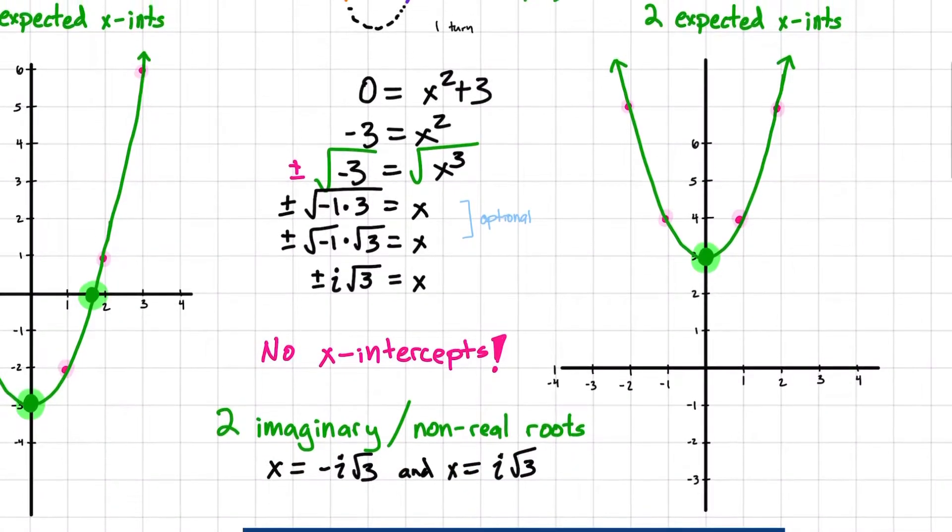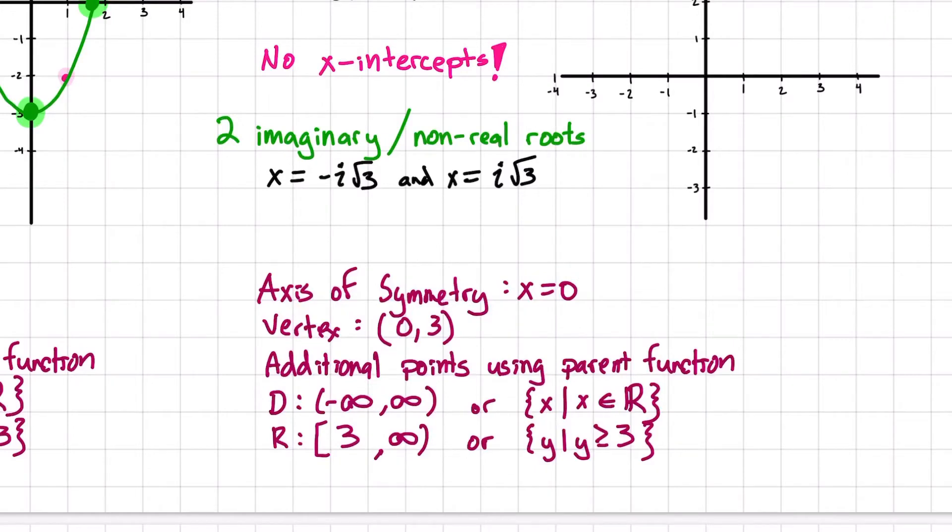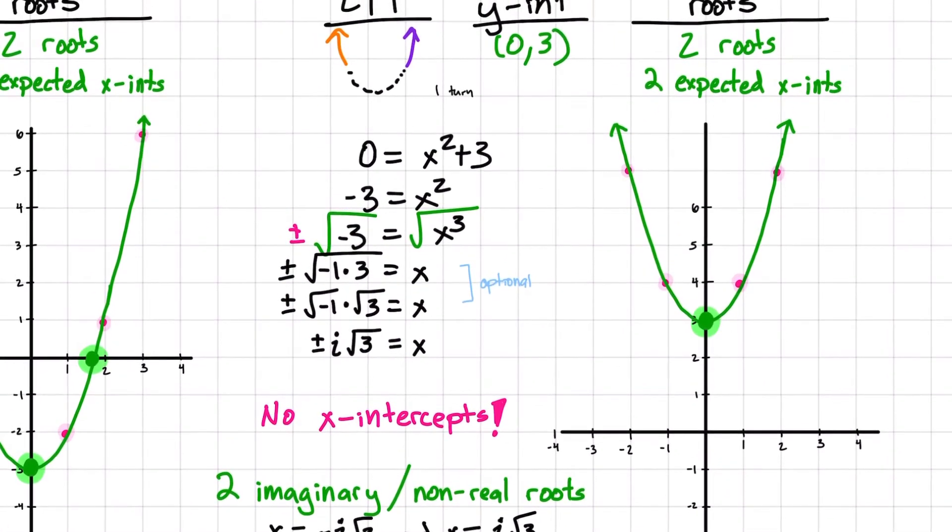Now, I can graph this because I know that this is a, I know my end behavior, it's rising to the right and rising to the left. And I have my y-intercept at 0, 3. So with that knowledge, I could then at least just form some form of a parabola. But since I know, again, that this is a parabola with an a of 1, I can then just graph it from this vertex, 0, 1, 1, 2, 4, so forth, or plug in a few additional points if I want to. All right, and again, my last little bits, my axis of symmetry is also x equals 0. My vertex is 0, 3. I got a few additional points from the parent function, and I have my domain and range, this time going from 3 all the way up to infinity.